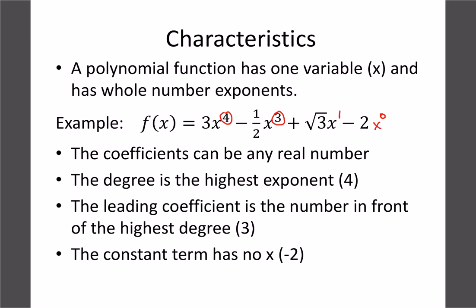Coefficients can be anything — whole numbers, fractions, square roots, positives, negatives. We classify the degree of the polynomial as whatever the highest exponent is; in this case it's four, so it's a fourth degree polynomial. The leading coefficient is the number in front of that highest degree term — here it's positive three. Whether it's positive or negative will make a difference. The constant term is the very last term, in this case negative two, which has no x value.